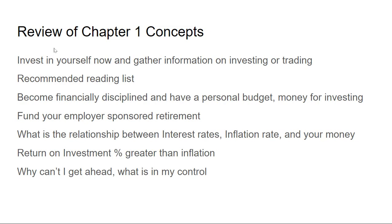Last month we had Chapter One — just a quick review of concepts for our newest investors. We covered: invest in yourself and gather information on investing or trading. I provided a recommended reading list of five books. Become financially disciplined, have a personal budget, and have some money for investing, then fund your employer-sponsored retirement plan first. We covered the relationship between interest rates, inflation rates, and your money. We covered return on investment as a percentage — it should be greater than inflation so that your money is actually growing. We covered why you can't get ahead and what is in your control.